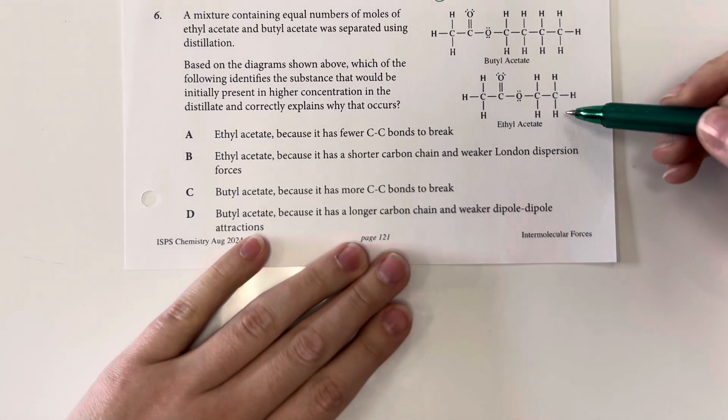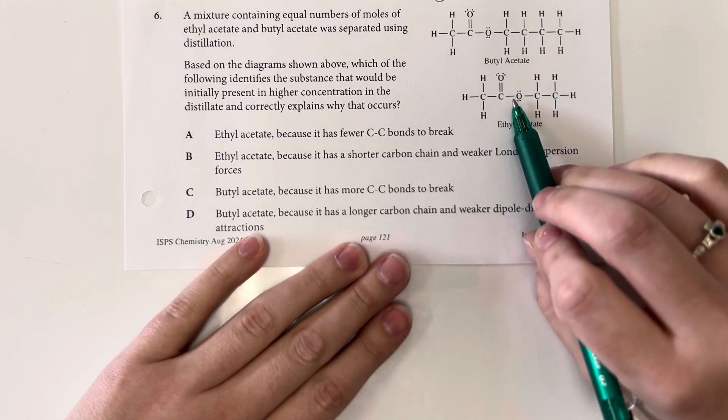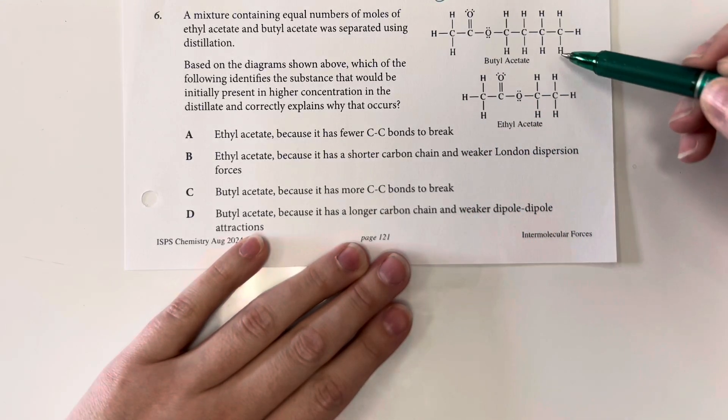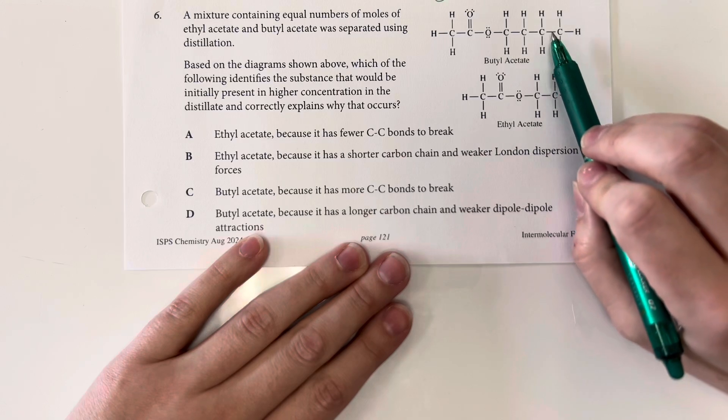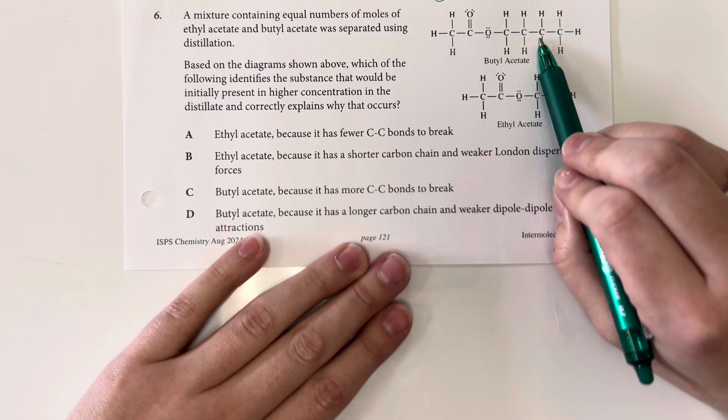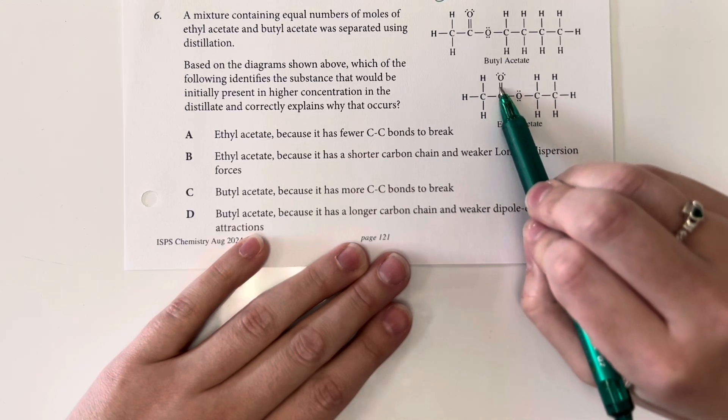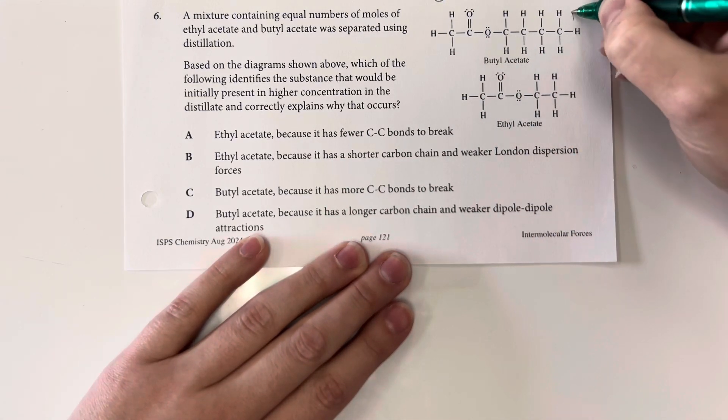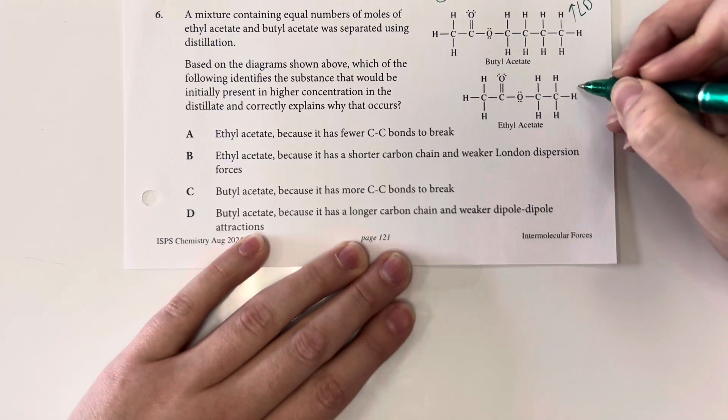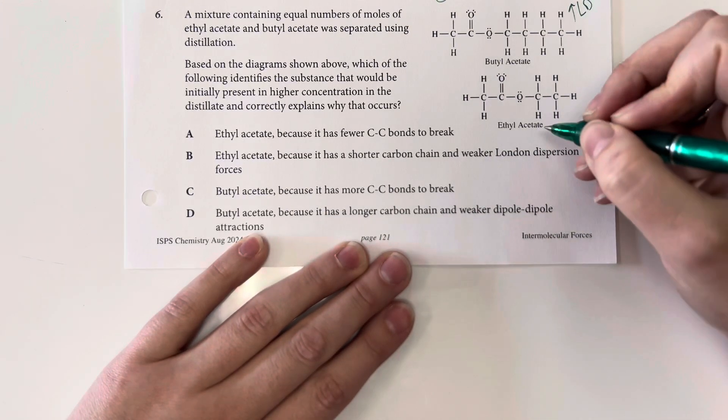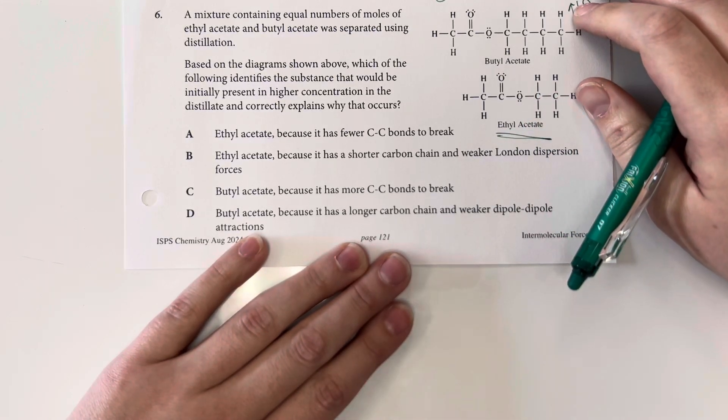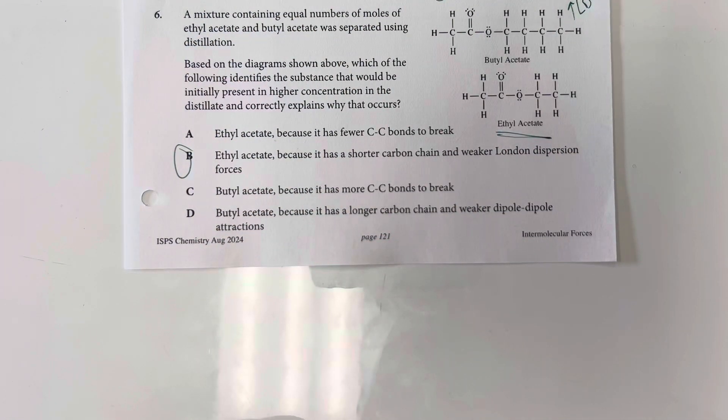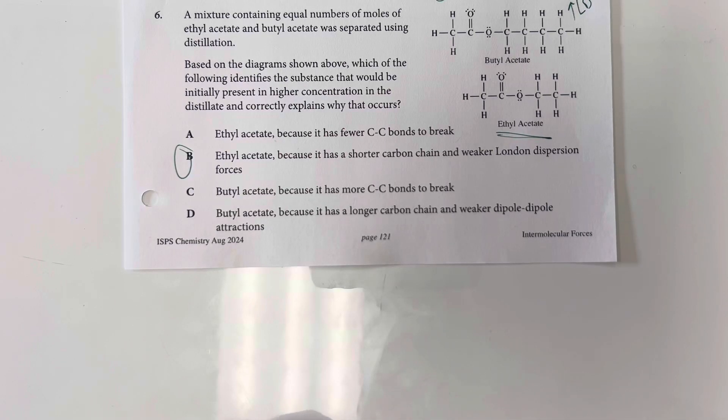So between ethyl acetate and butyl acetate, we have similar oxygen positioning between the two. However, butyl acetate does have a longer carbon chain, which means that we are going to have larger London dispersion forces along with my polar interactions with the oxygen present. So since this is going to have a larger London dispersion, this means that that is going to come out second. So ethyl acetate should come out first. And that is because the ethyl acetate has a shorter carbon chain and therefore weaker London dispersion forces. And so it is going to boil out first.